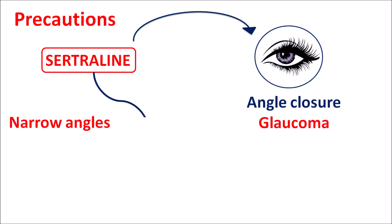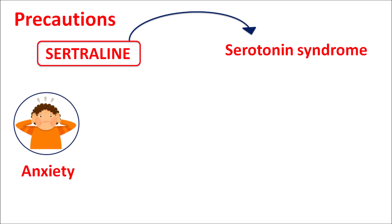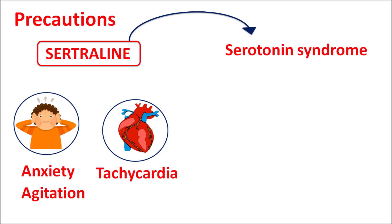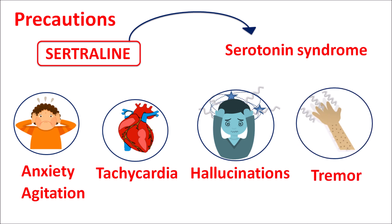Similarly, this drug can precipitate serotonin syndrome. Just like other SSRIs, this drug increases 5-HT levels, which can produce serotonin syndrome resulting in symptoms such as anxiety, agitation, stimulation of the heart resulting in tachycardia, and psychotic symptoms such as hallucinations, tremor, and sweating. All these symptoms can be observed with serotonin syndrome, so this drug should be carefully given along with other drugs that increase 5-HT levels.